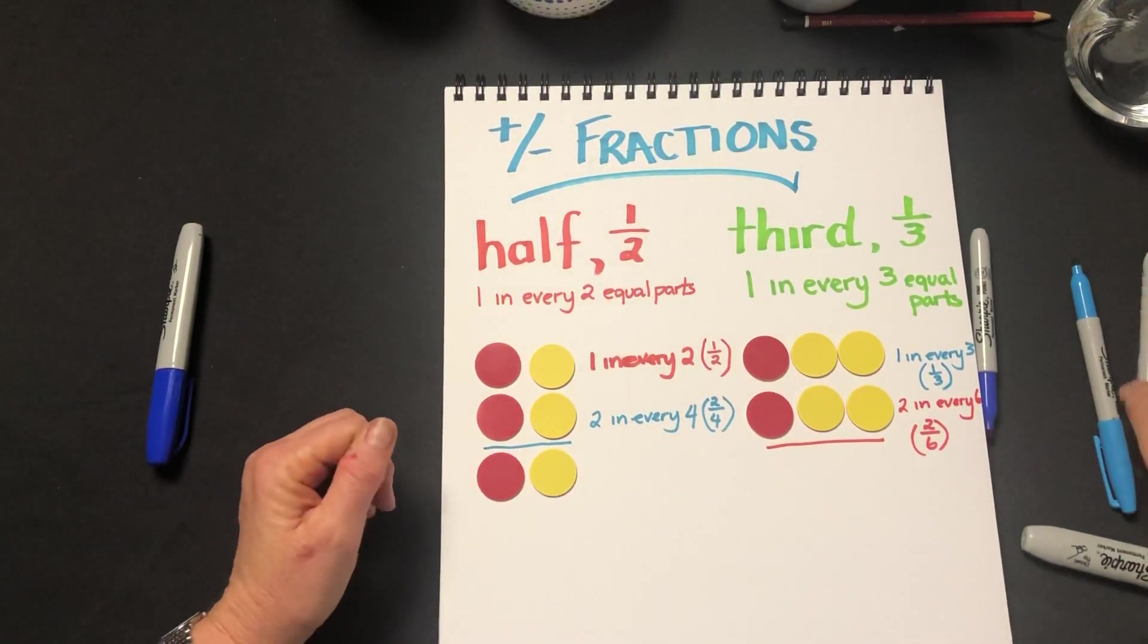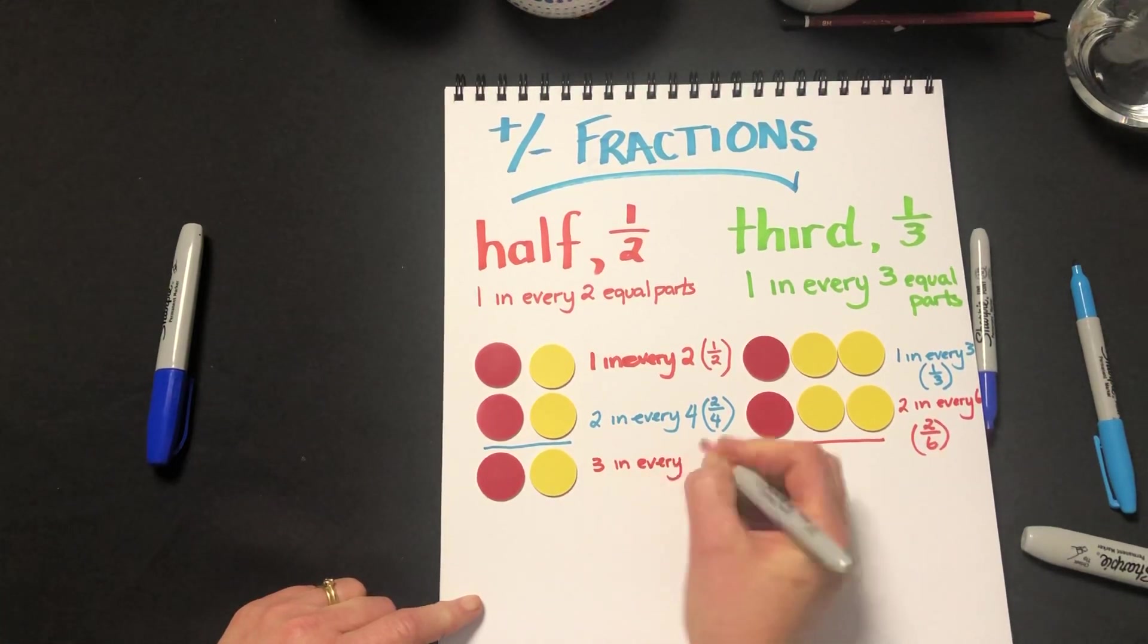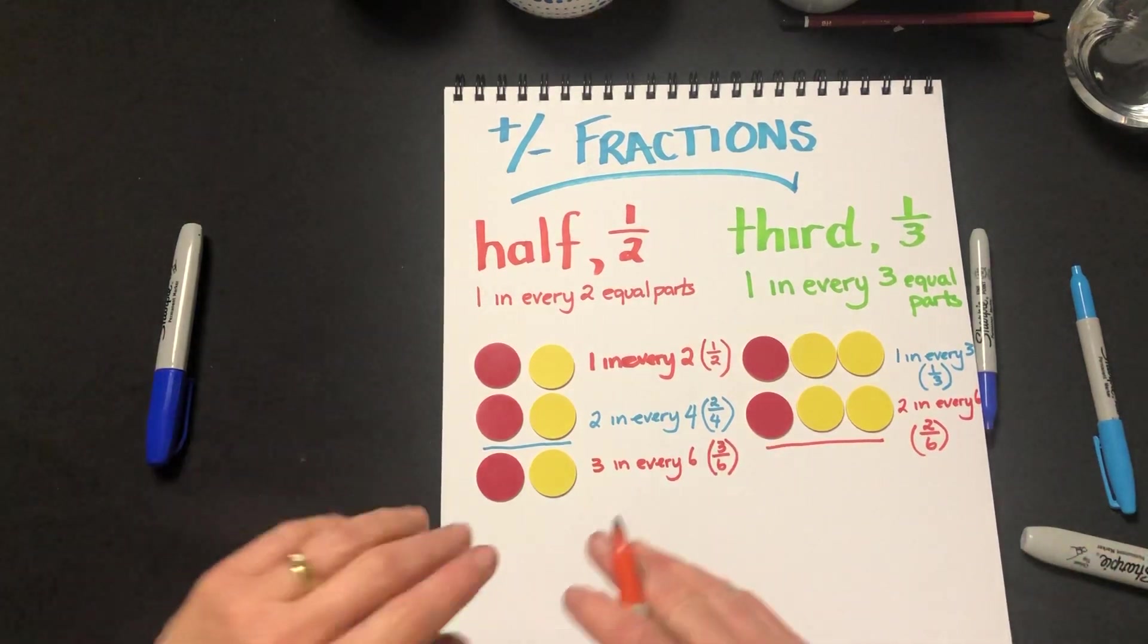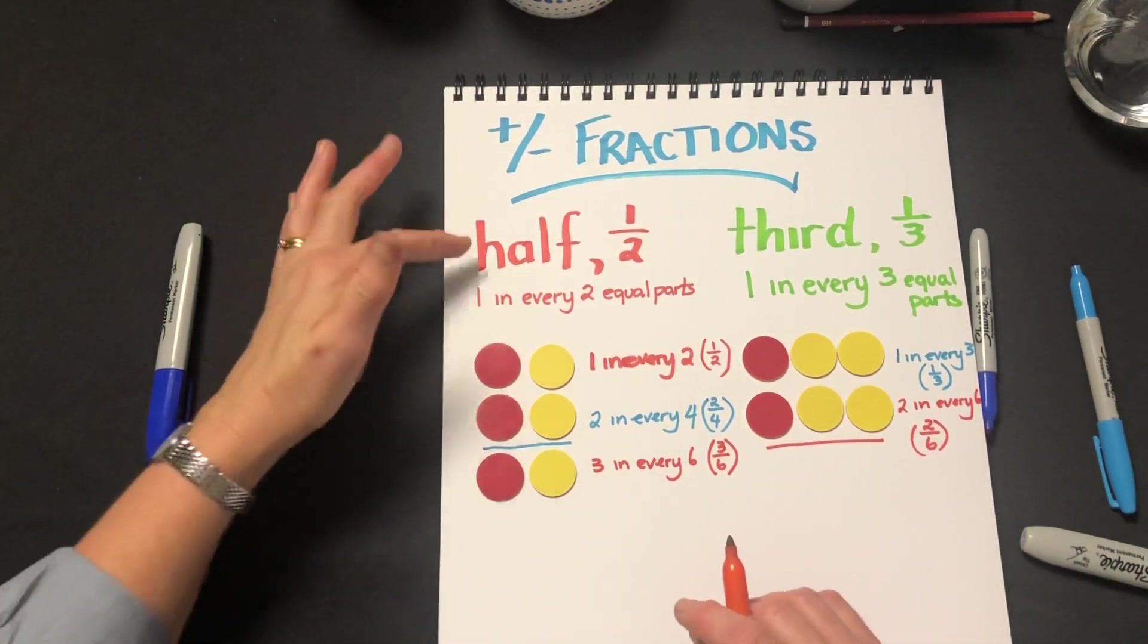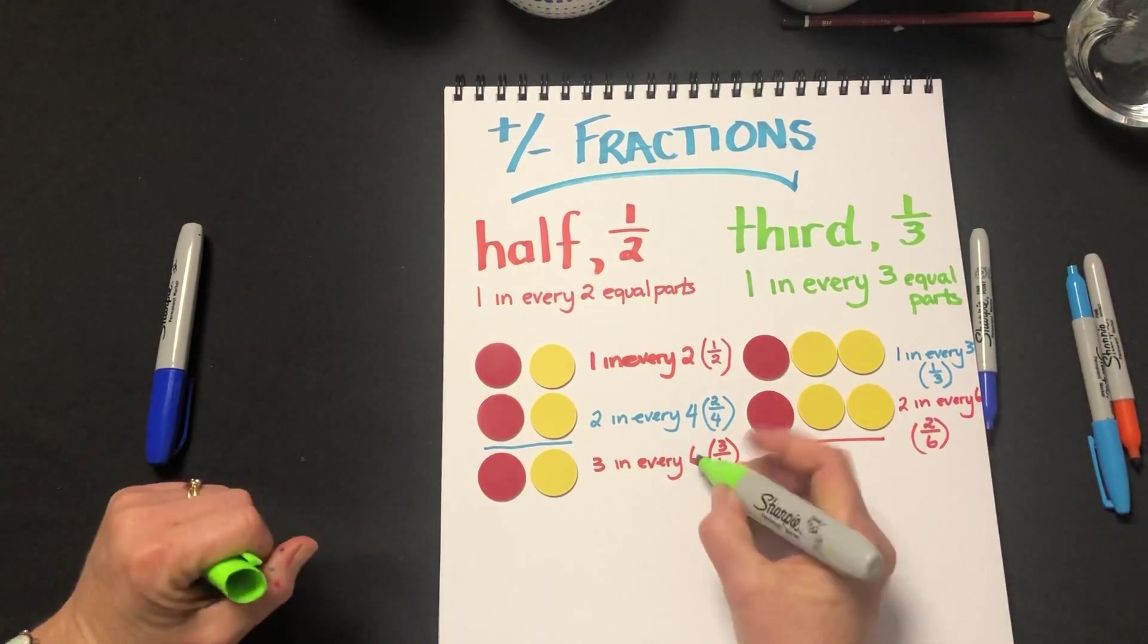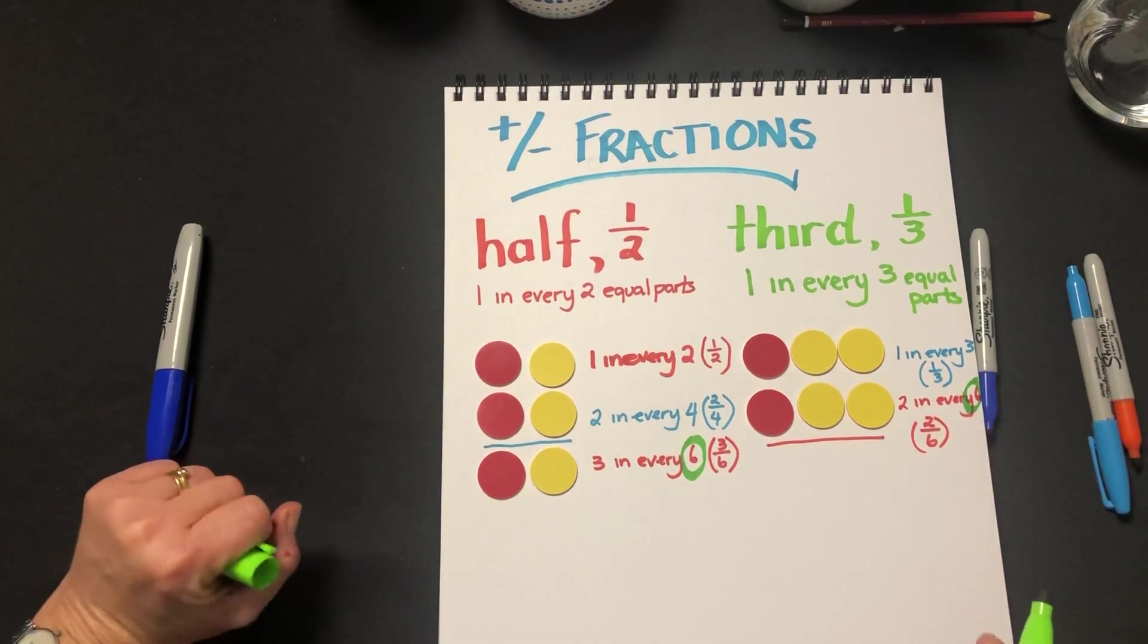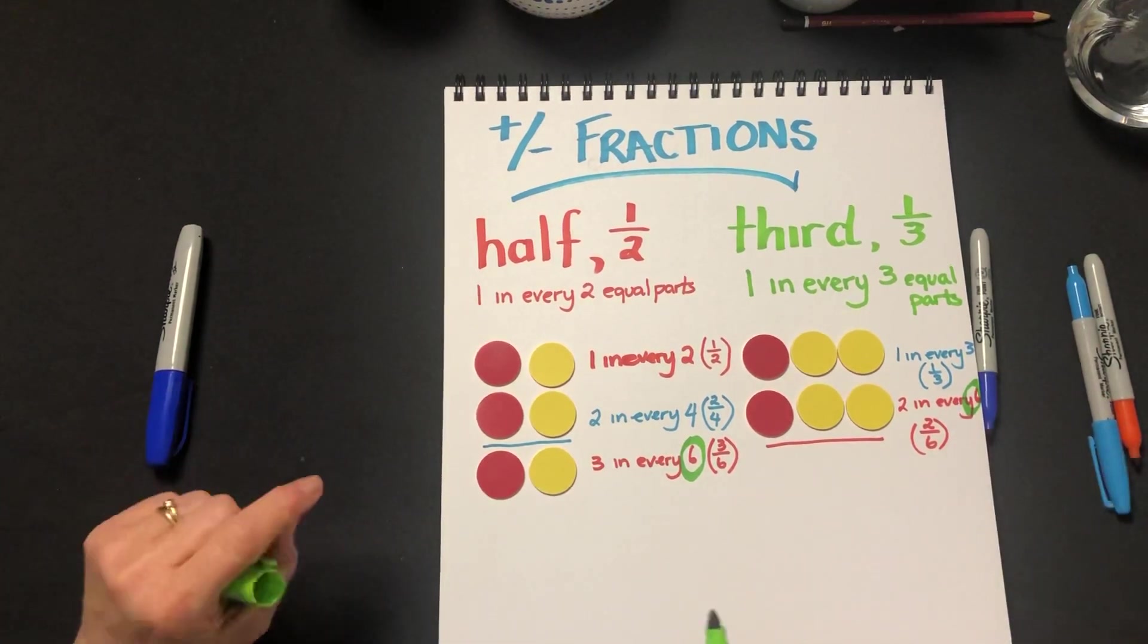This time we've got three, three in every six. We know that three sixths is the same as one half. But what we can also see now is that our wholes are the same. So we're comparing the same wholes.